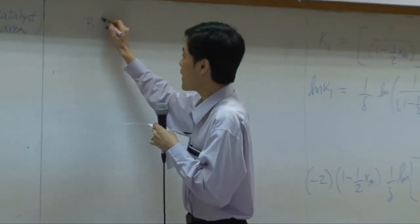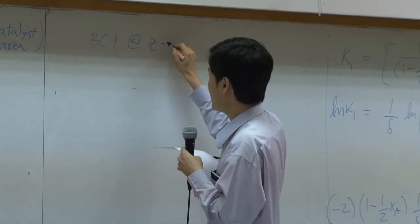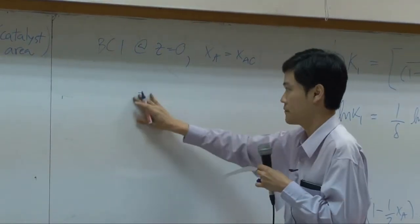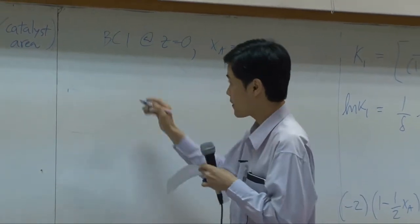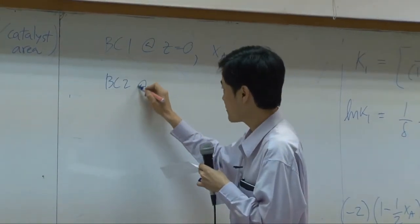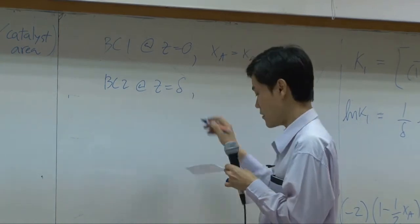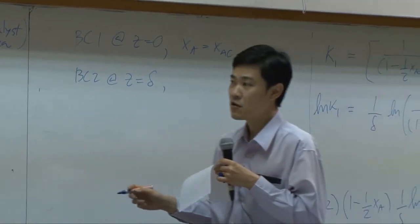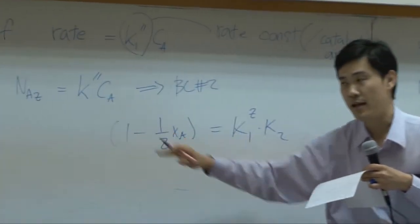For the first boundary, as z equals zero, xa equals xa0, same thing. But for the second boundary, as z equals delta, what do we have here? We know that we need to use this rate.